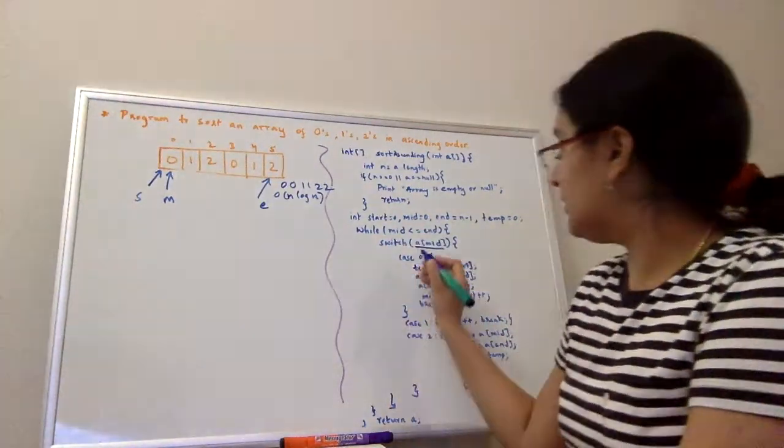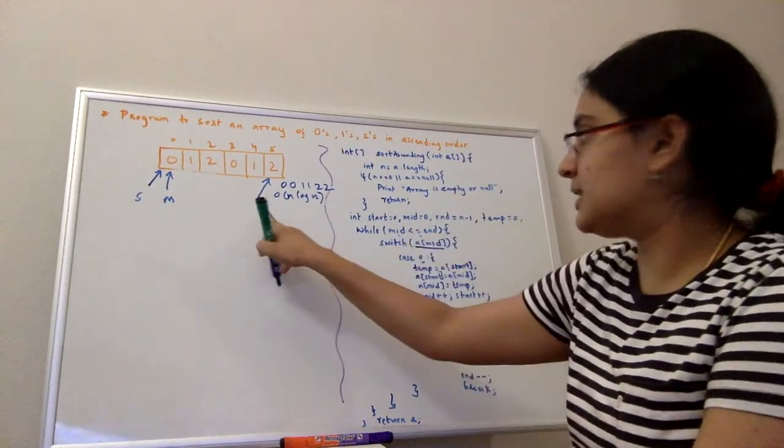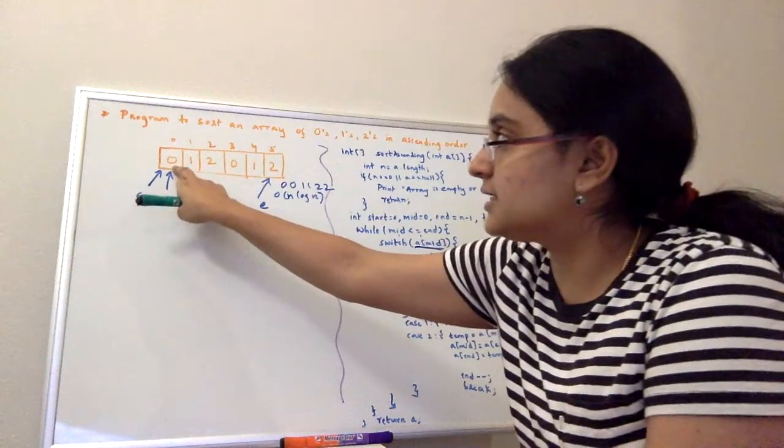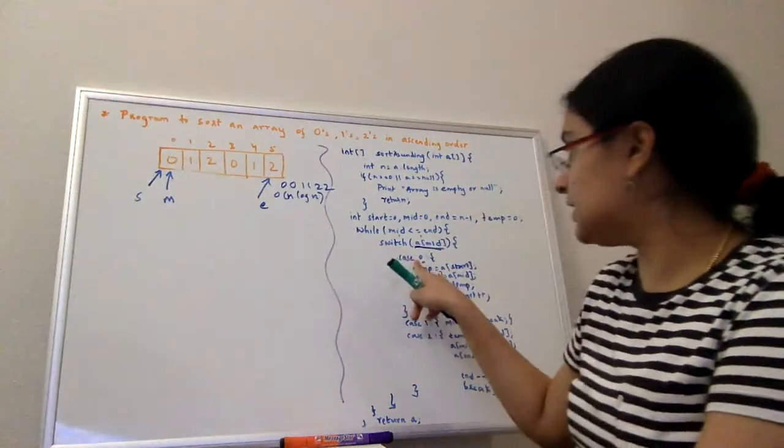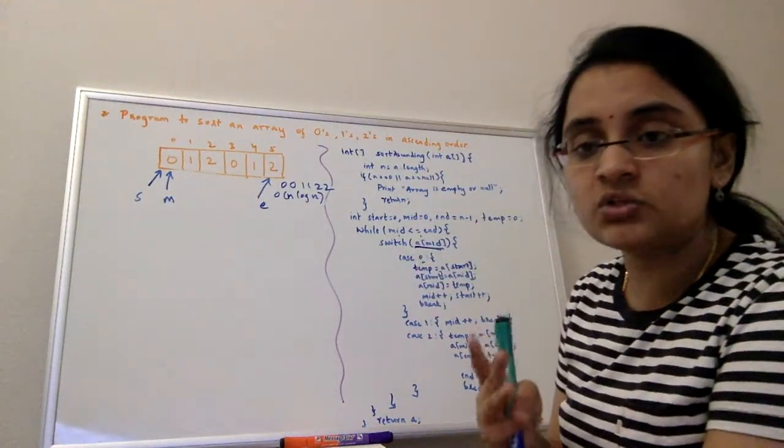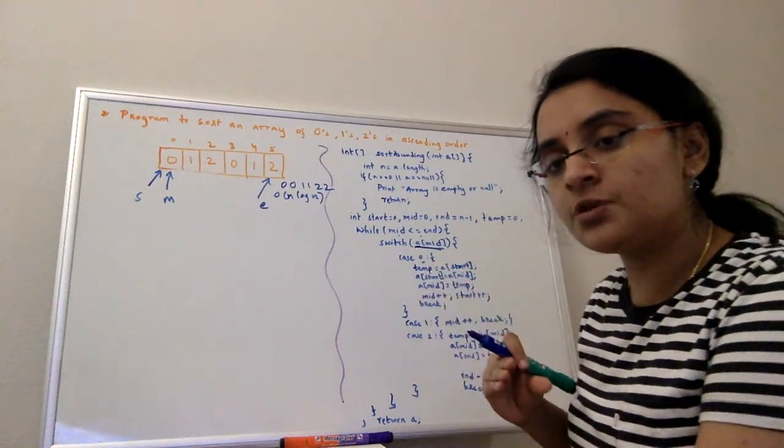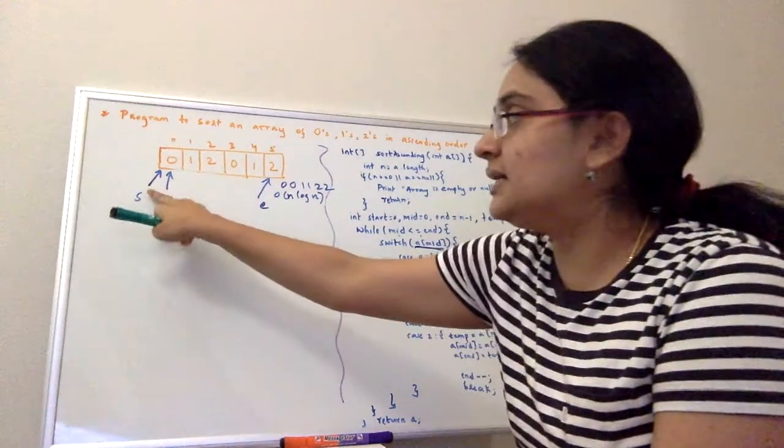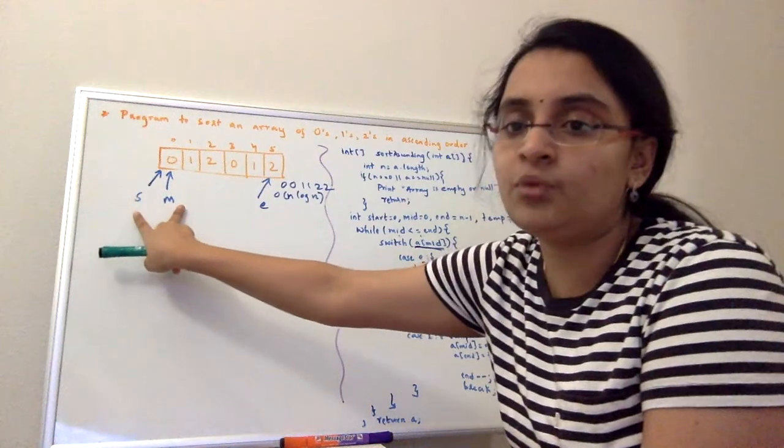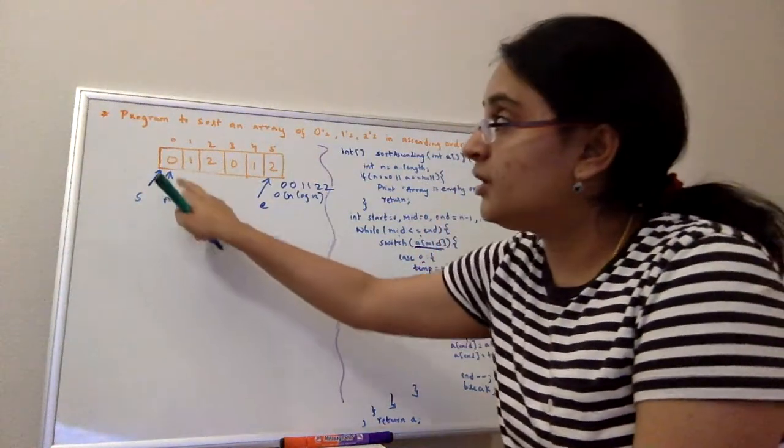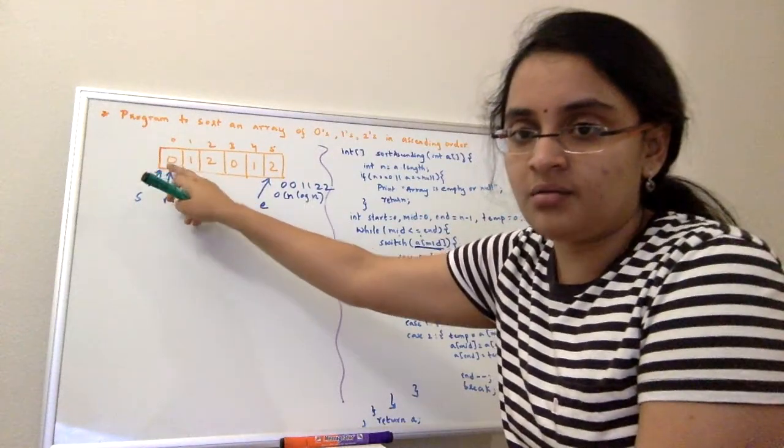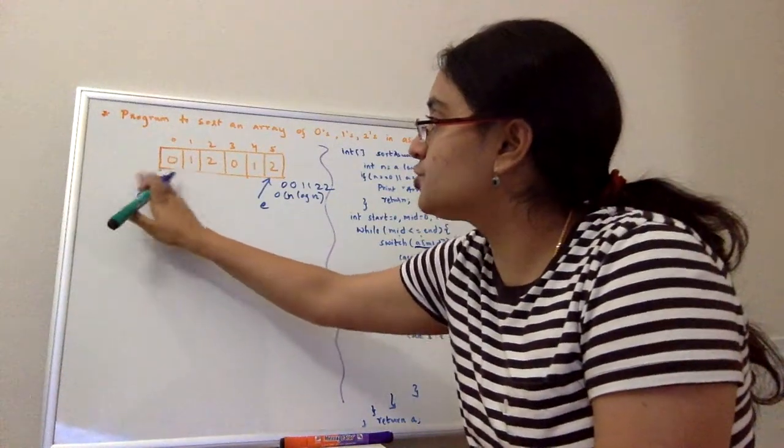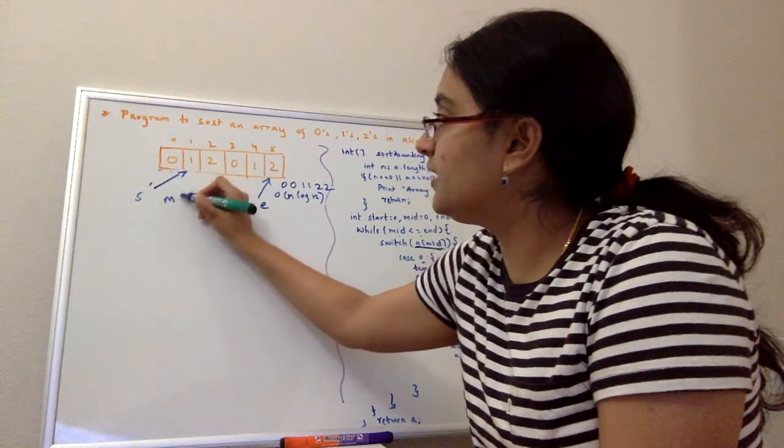First time, when the condition is true, when mid is less than end, I'll check what is my mid element. My mid element is zero. When it is zero, I'll swap mid and the starting element and increment both the pointers. But because right now it is already in the right position, even after swapping it would be the same. The only thing that changes is we are incrementing these pointers to the next element. Start is pointing here, mid is also pointing here.